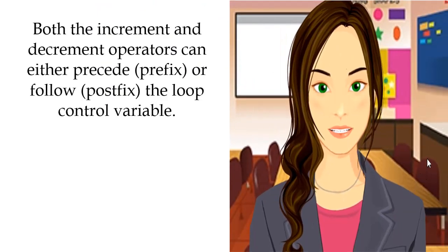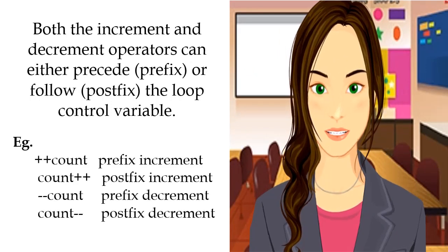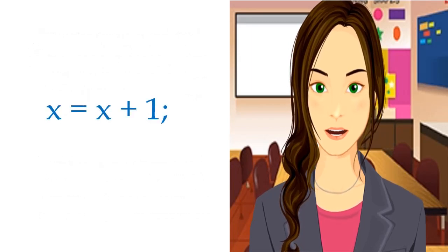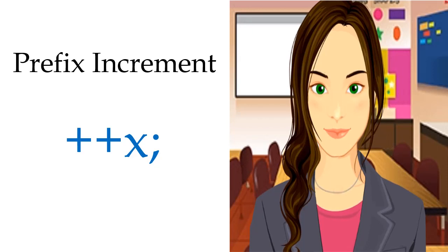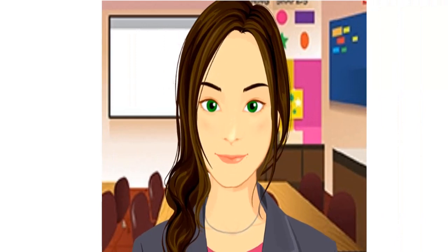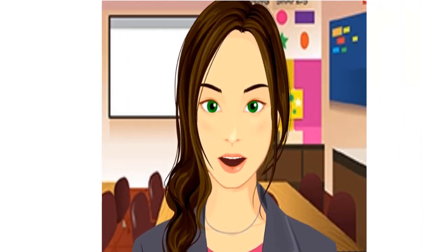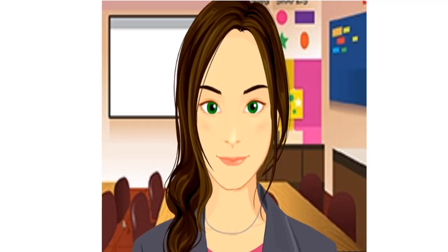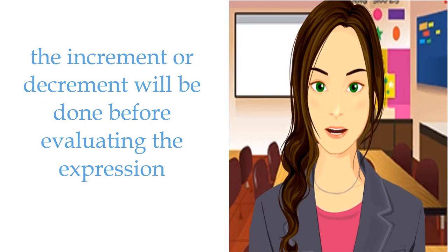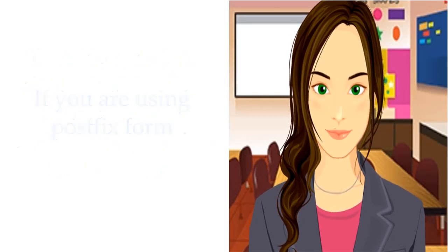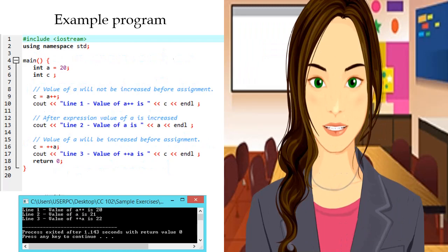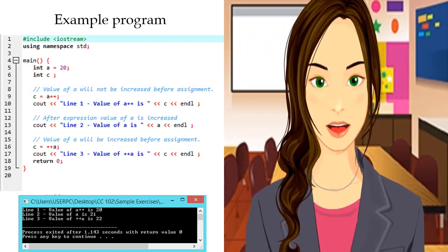Both the increment and decrement operators can either precede (prefix) or follow (postfix) the loop control variable. For example, x = x + 1 can be written as ++x (prefix) or x++ (postfix). When used as part of an expression, there is an important difference: if you use the prefix form, the increment or decrement will be done before evaluating the expression, and if you use the postfix form, the increment or decrement will be done after the complete expression is evaluated.